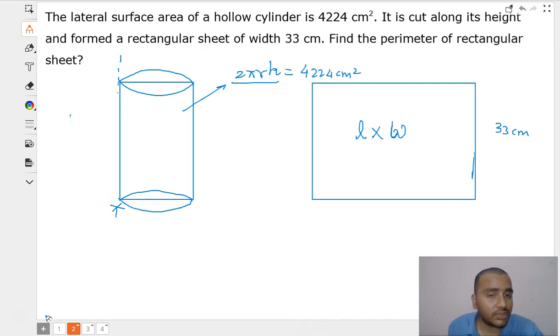In this case we don't know the value of length, so let us call the length L. The area of this sheet is L multiplied by 33. We know that the cylinder has been converted into that sheet.